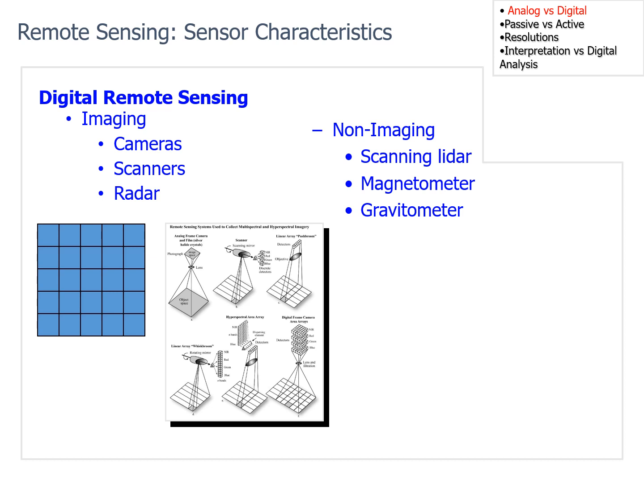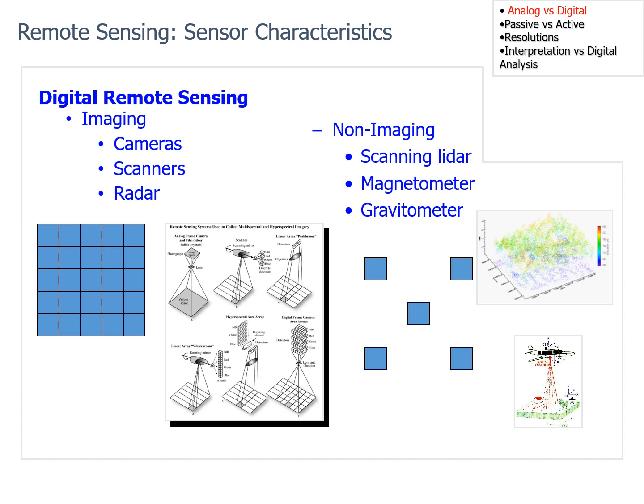Different types of imaging we can do include cameras, scanners that collect image information in a slightly different way, and radar. Non-imaging remote sensing involves things like scanning LIDAR, magnetometers, and gravity meters. These collect data at a single point, and then the location of that point is moved back and forth across the landscape to pick up measurements of interest and make what appears to be an image, but fundamentally is not an image — it's a sample of points.